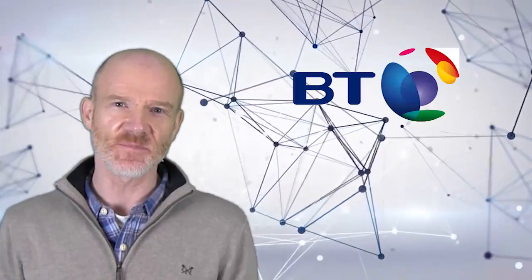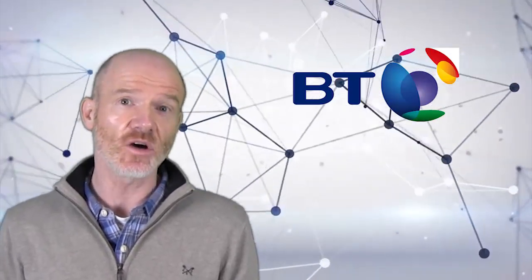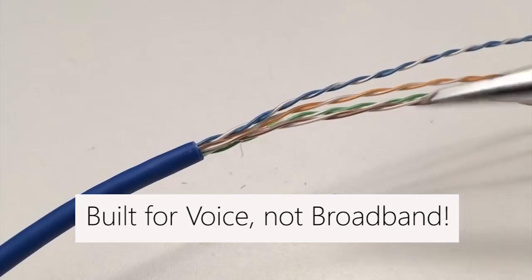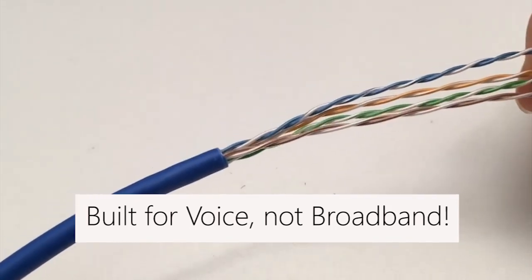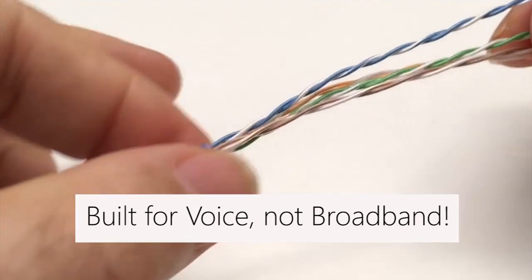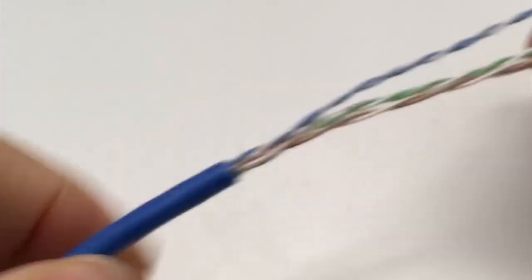First let's look at BT. They were founded in 1846 and built their network on twisted copper pair. Of course it was built for voice, so when broadband came along in the 1990s, so did standards to put internet signals over this, by now, rather old copper wire.